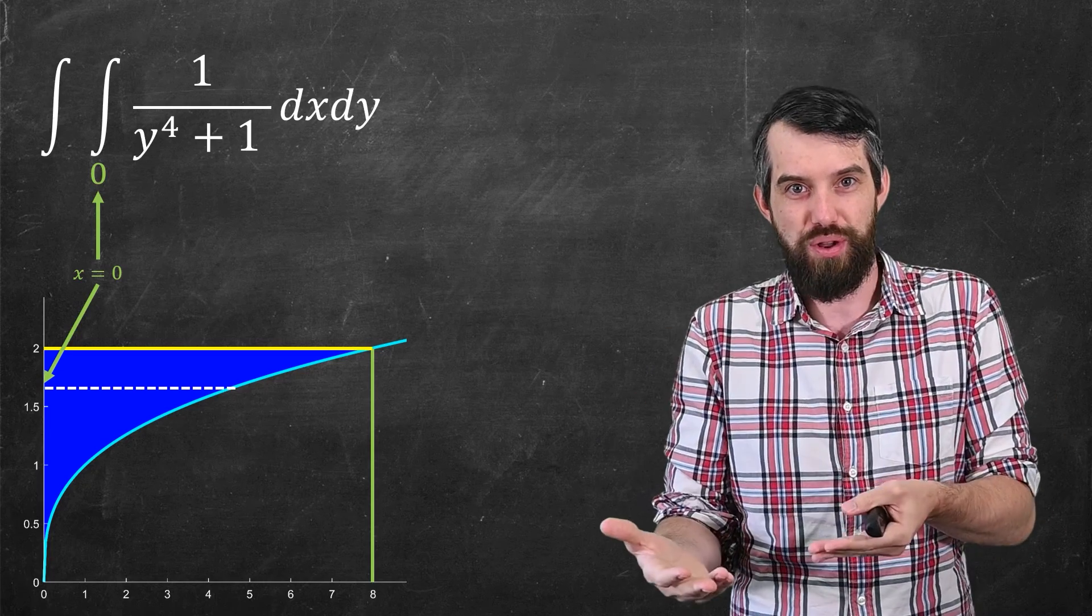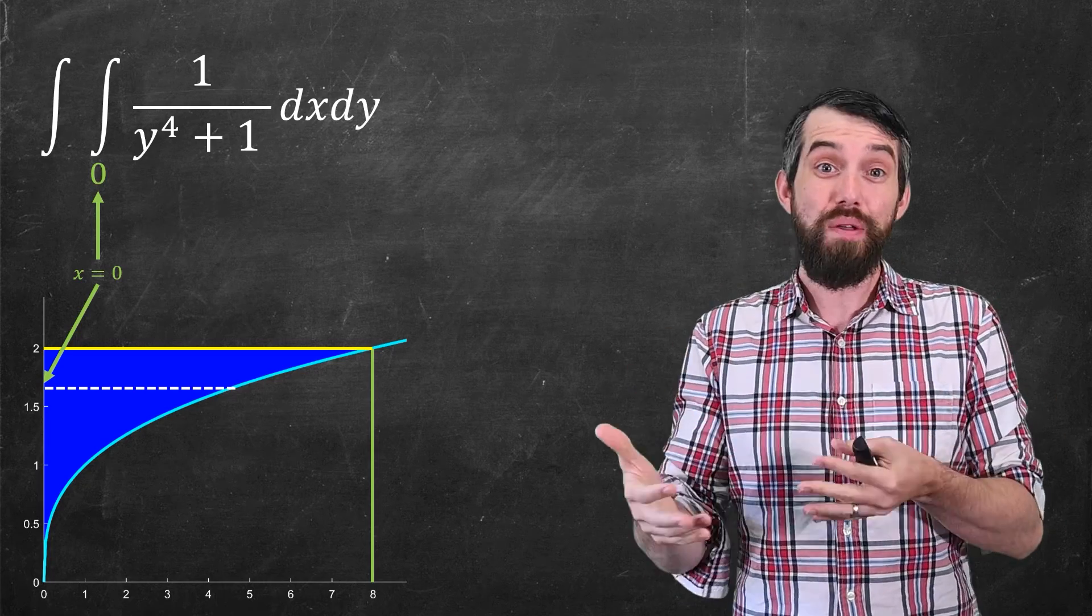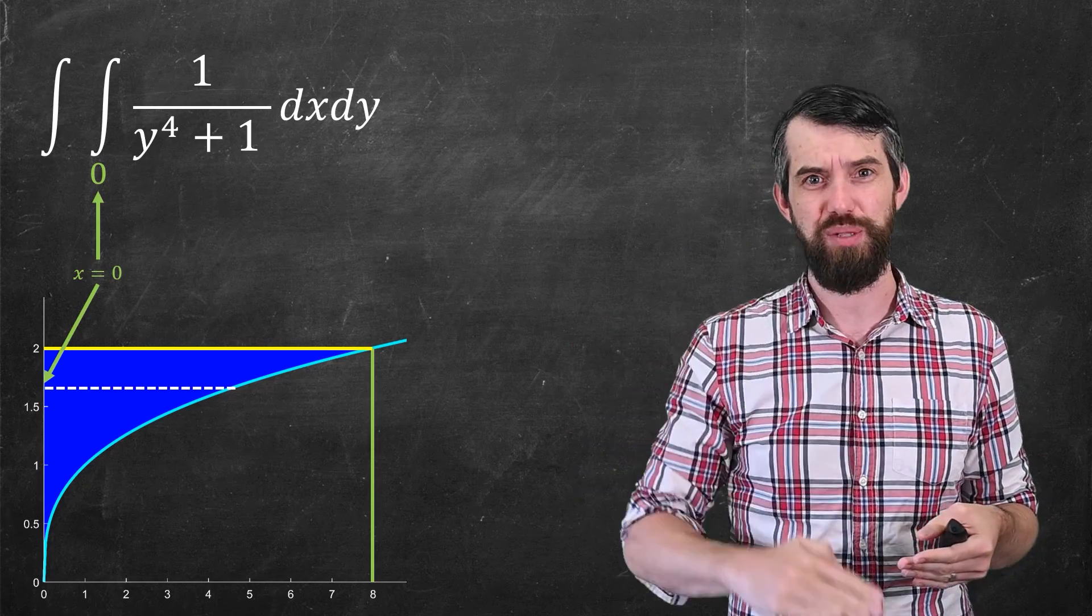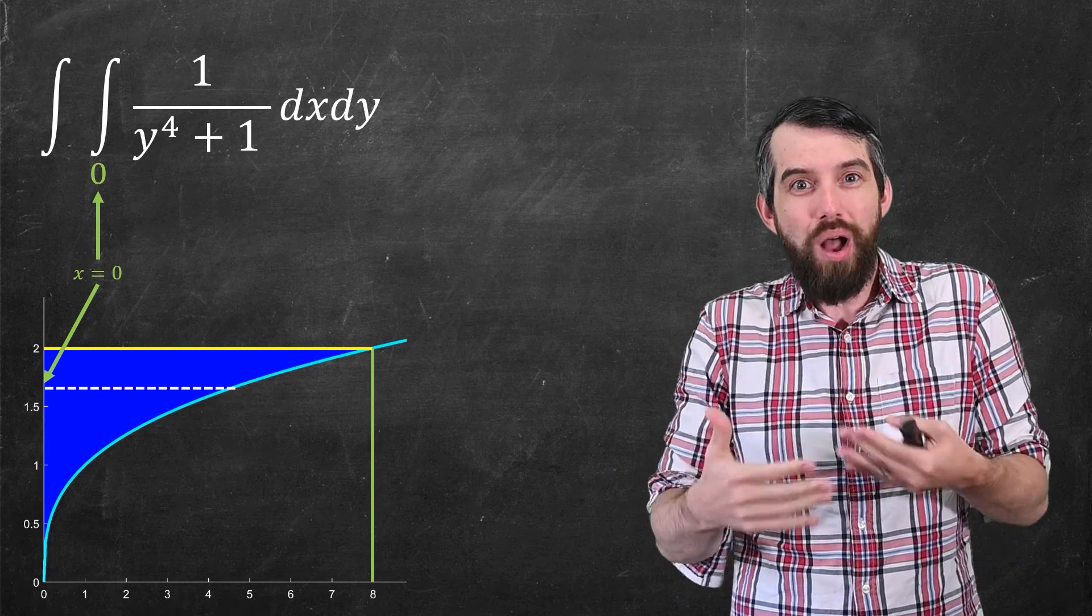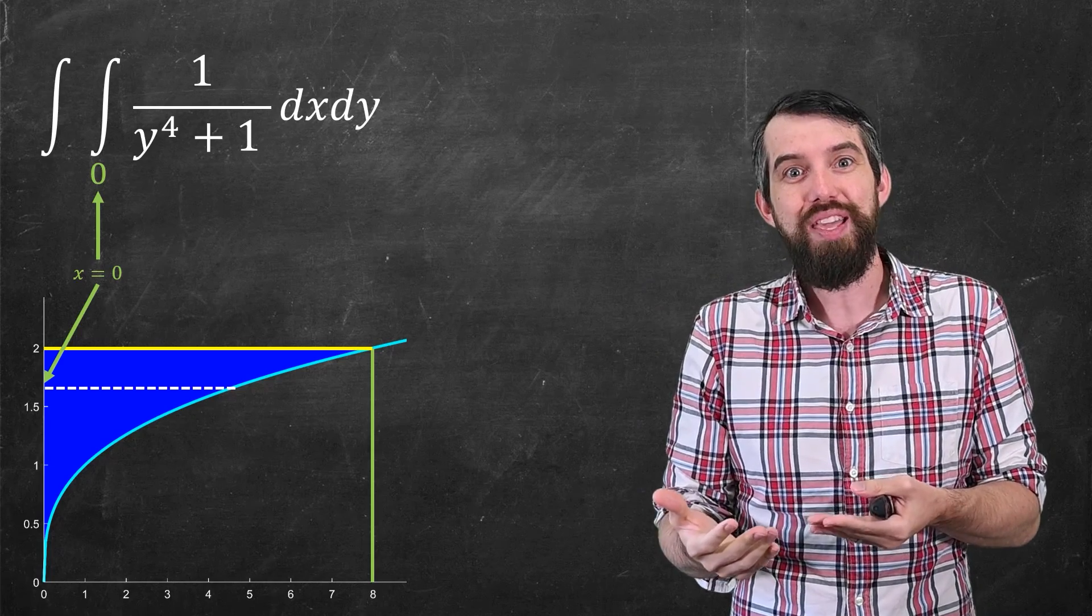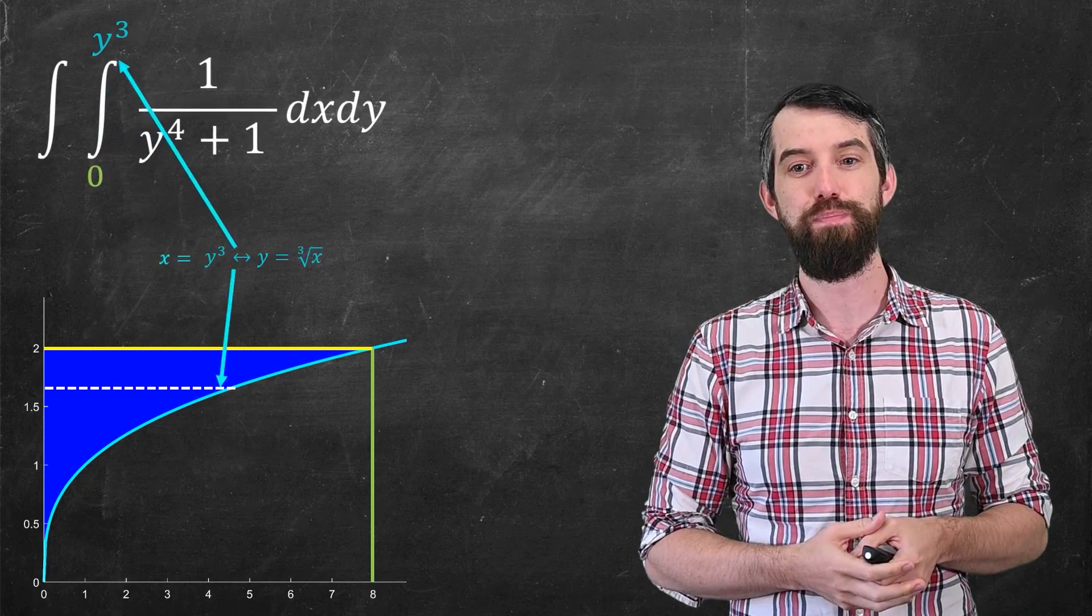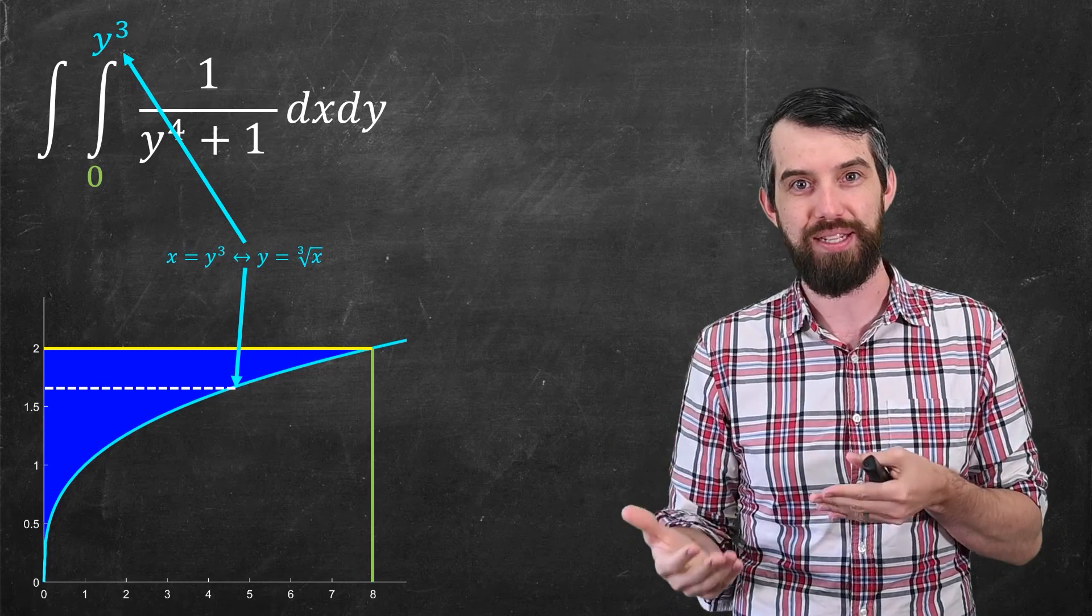And then if I go along that horizontal strip, and I walk along that horizontal strip, which keep in mind is just some generic y value, some generic height. But if I walk along with just a random one, the end point, the furthest right point that I get to is this point on the curve y equals cube root of x.